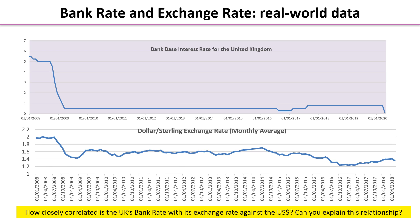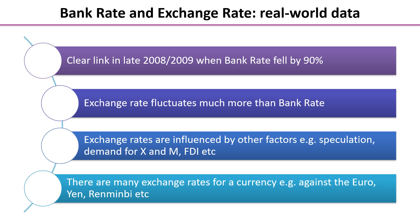There is a clear link — in late 2008 and 2009 when the bank rate fell by 90%, the exchange rate fell too. However, the exchange rate fluctuates much more than the bank rate, and that's to be expected because it's not just the bank rate that influences the exchange rate. Other factors include speculation, demand for exports and imports, inward foreign direct investment, government policy, and the stage of the economic cycle. Also, there are many exchange rates for a currency — we could be considering sterling against the euro, yen, or renminbi — so the dollar is not the only exchange rate.